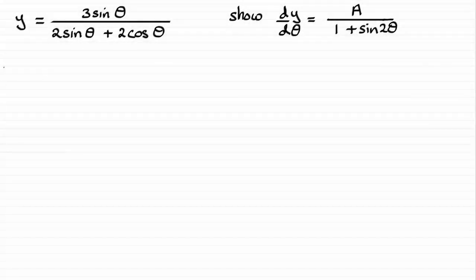Just in case you're not looking at this question on my website, briefly we're given that y equals 3 sine theta over 2 sine theta plus 2 cosine theta, and asked to show that dy by d theta is given by this constant a, which is a rational number, over 1 plus sine 2 theta.